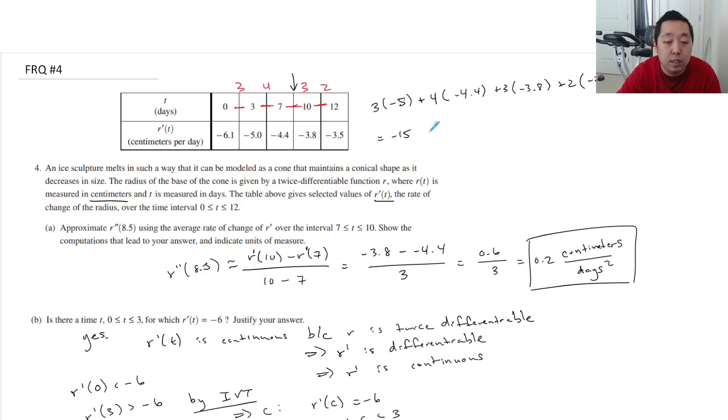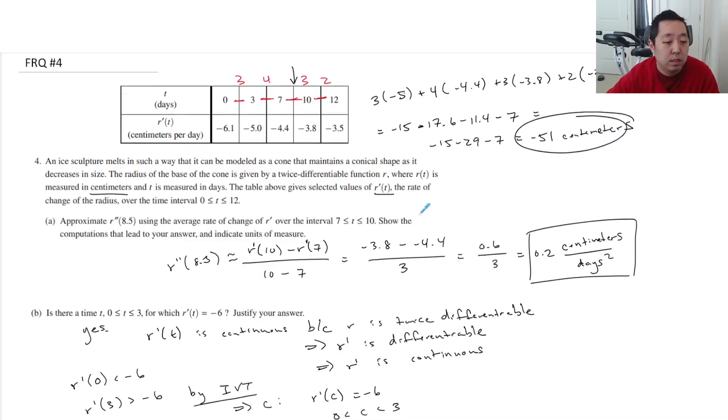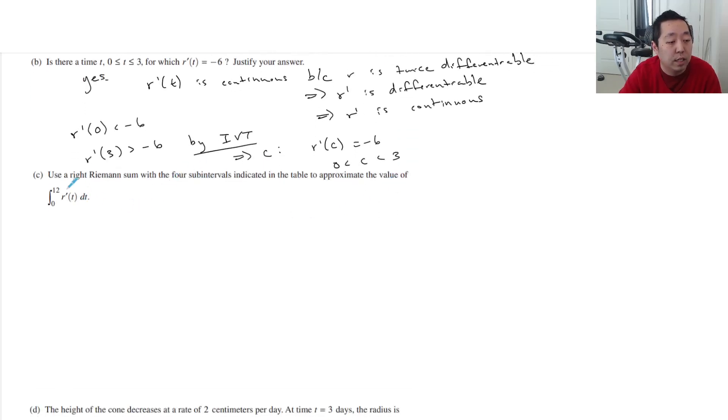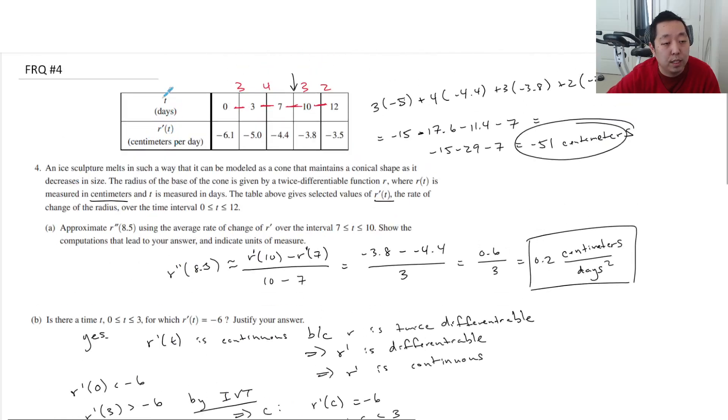So this is -15, minus 16, 17.6, minus 9.2, 11.4, minus 7. If I did the arithmetic wrong, I'm sorry. So this is like these two I put together because they have the 0.6 and the 0.4. So it'd be minus 29. So -15, -29, -7, minus 44, -51 centimeters. The integral of the rate is going to be centimeters, because you're going to do centimeters per day times days.